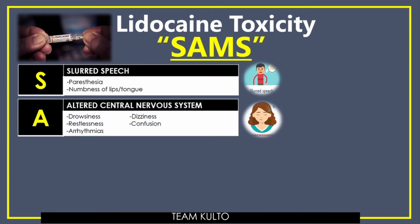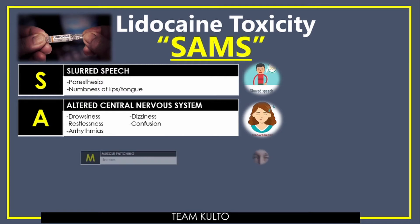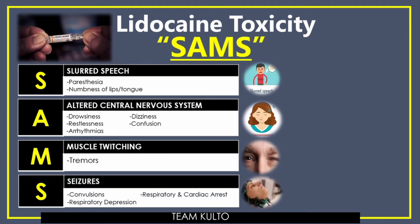When we say altered central nervous system, this relates to the consciousness of your patient. Signs include drowsiness, restlessness, arrhythmias, dizziness, and confusion. Next, M stands for muscle twitching — you can suspect lidocaine toxicity when this is present. The last letter is S for seizures. Remember, lidocaine is given for status epilepticus, but in toxicity, you can expect signs like convulsions, respiratory depression, and cardiac arrest — which is the worst thing you want to happen to your patient.